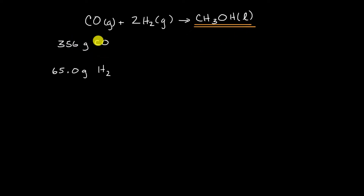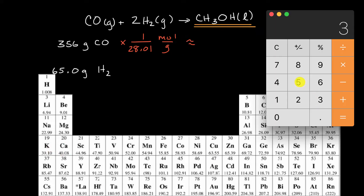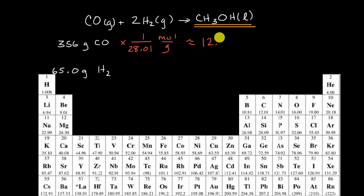A good place to start is by converting the amounts of carbon monoxide and molecular hydrogen into moles. Using a periodic table, the molar mass of carbon monoxide is 12.01 plus 16.00, which is 28.01 grams per mole. So 356 divided by 28.01 gives us approximately 12.7 moles of carbon monoxide.